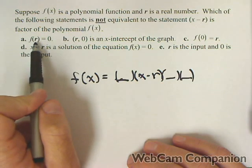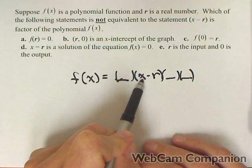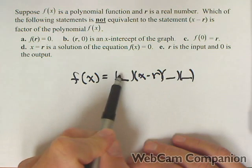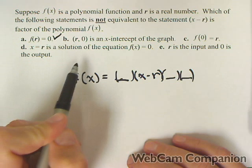Now the first one, f of r equals zero. Well if I put r in for x, this becomes zero. And because it's a product, they all become zero. So that's okay.